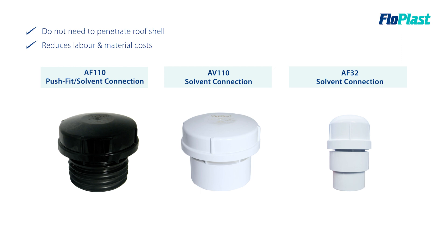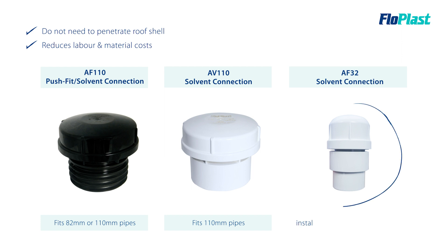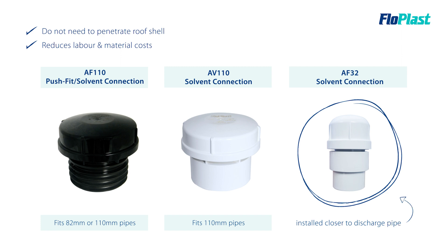Flowplast offer two variations of the soil pipe air admittance valve, with either a push fit or solvent connection, fitting either 82mm or 110mm applications. In some installations the waste pipe run may be too long, and this is where the smaller air admittance valve products can be installed closer to the discharge pipe. The AF32 solvent product features a universal adapter, meaning it can be connected to 32mm, 40mm, or 50mm pipe.